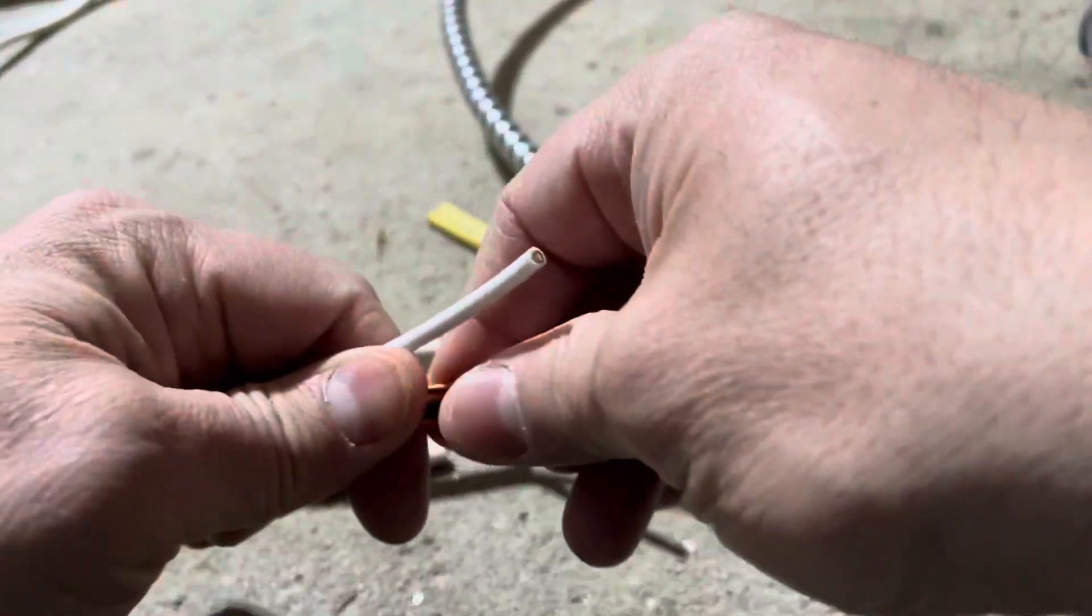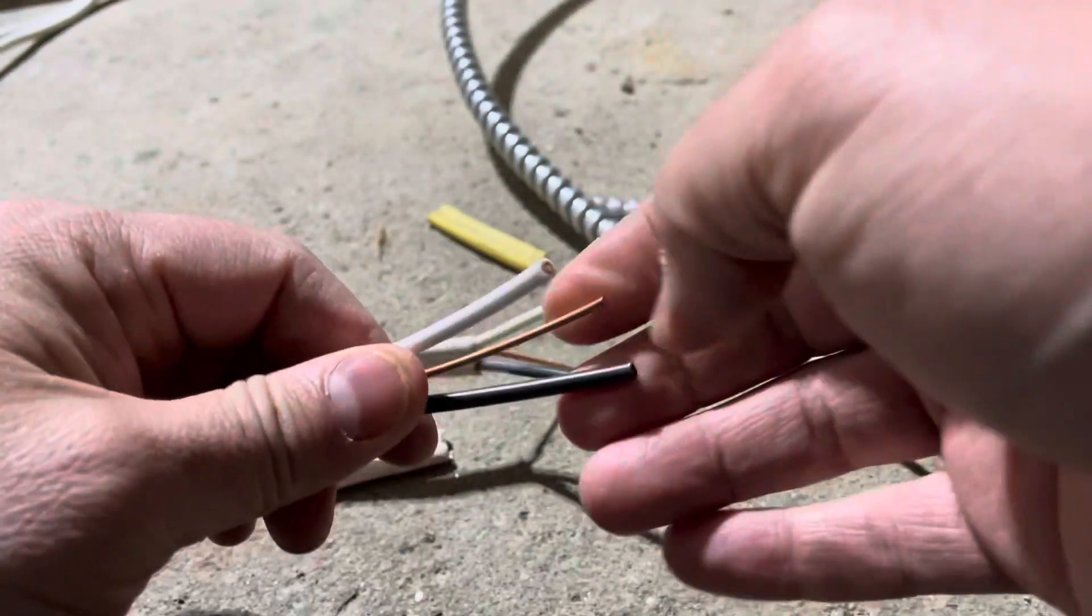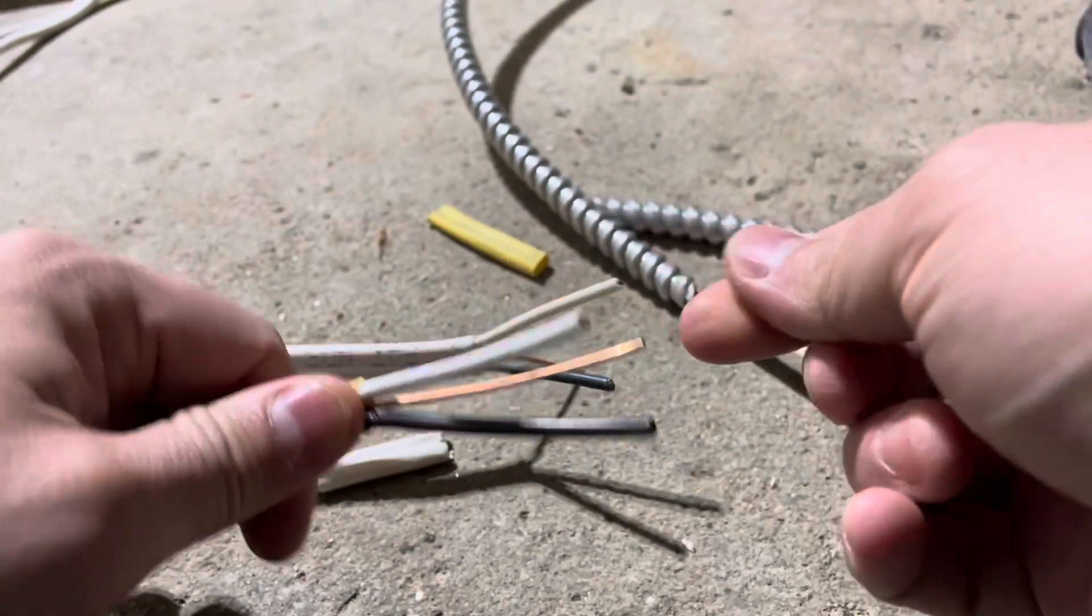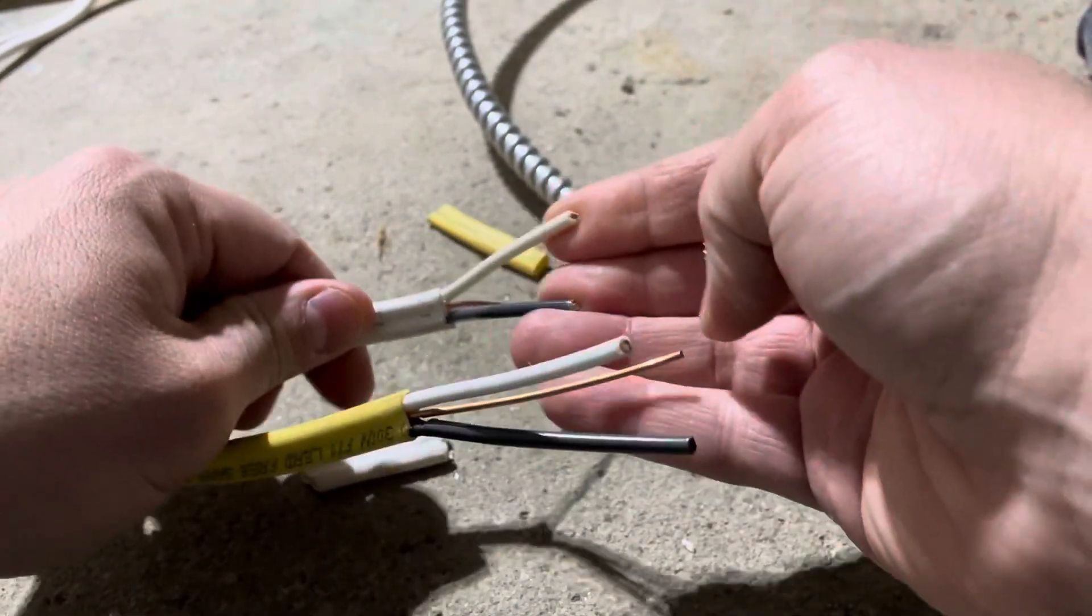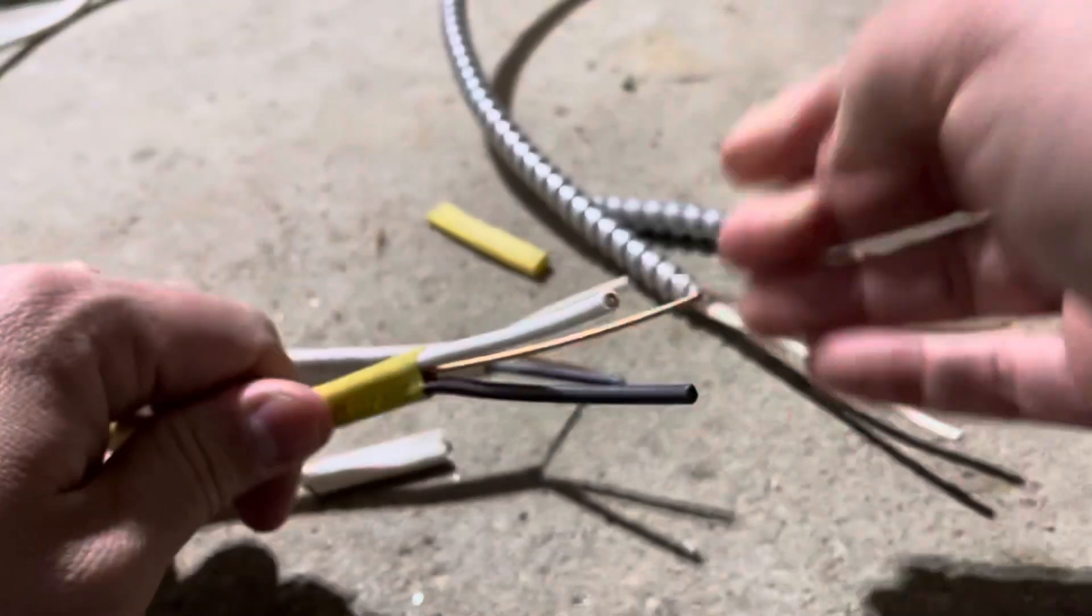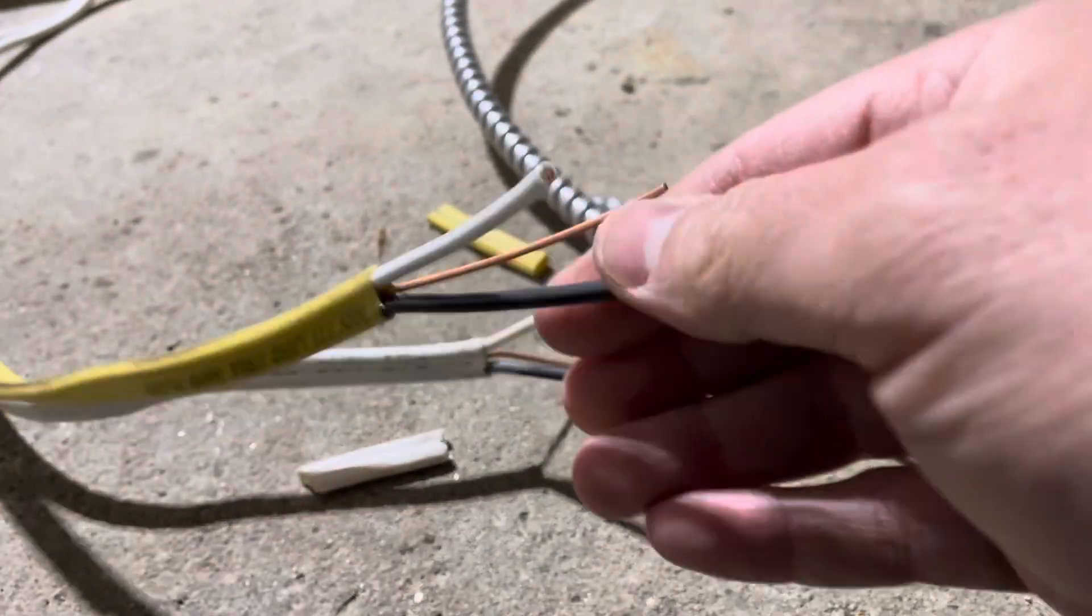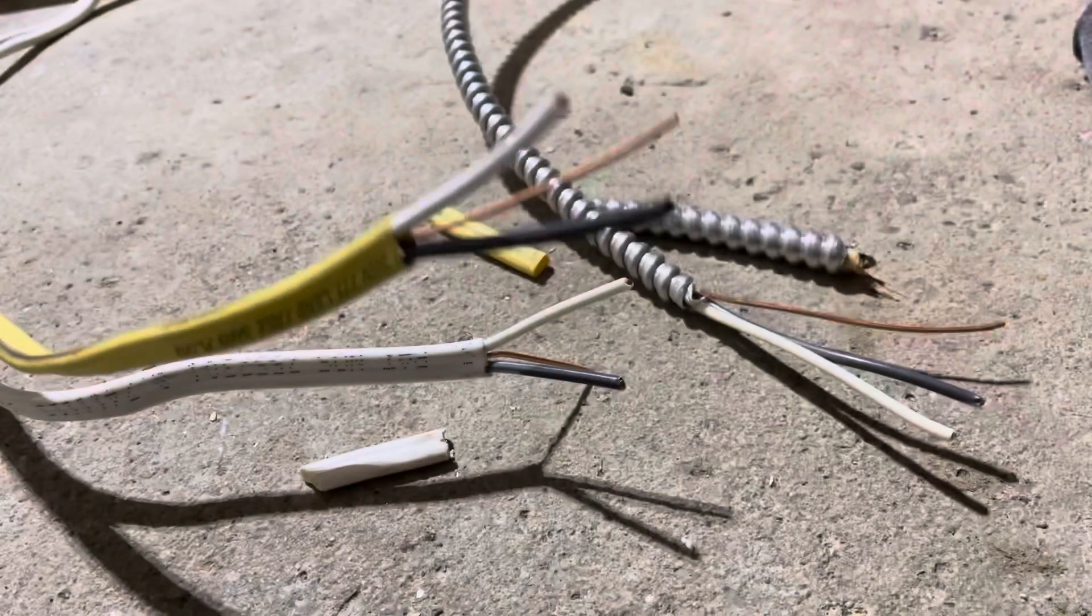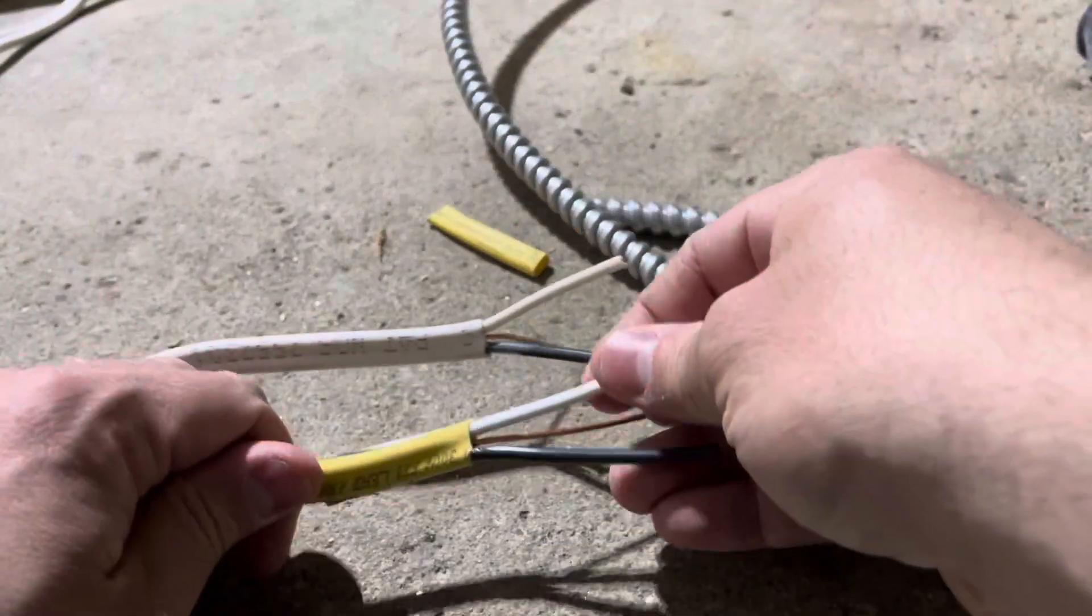Very simple. And the way gauging works is the lower the number, the thicker the wire. 14 gauge wire is thinner than 12 gauge wire. 12 is a lower number, but it is a thicker wire. That's how it works.